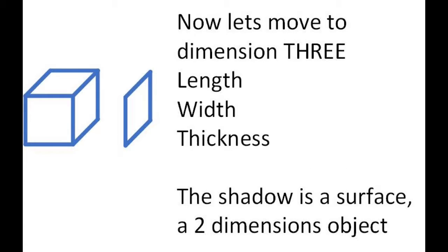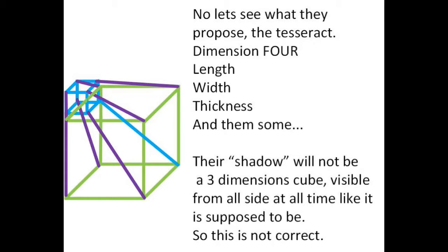Moving to dimension three, there is length, width, and thickness. The shadow is a surface, a two-dimensional object. What they propose as a four-dimensional object is the tesseract.